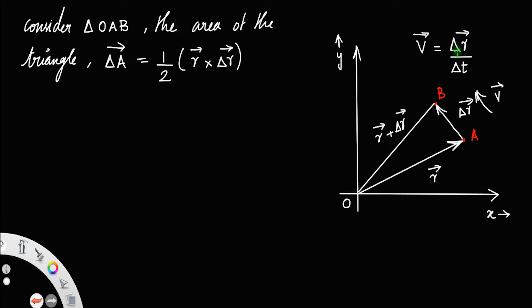Then you have delta r equal to, substituting in here, half r cross, this delta r will be delta r is equal to v times delta t. So v delta t.